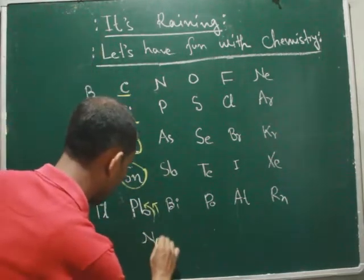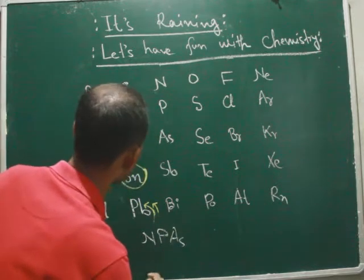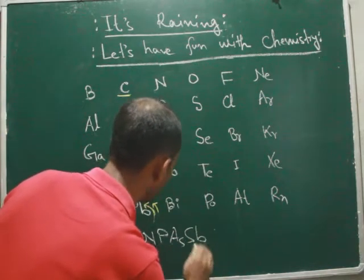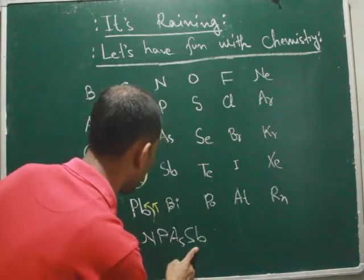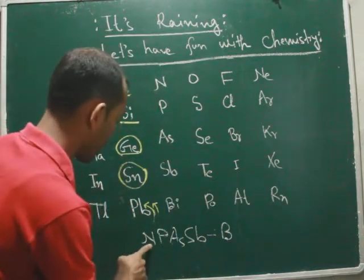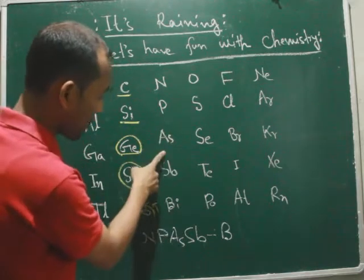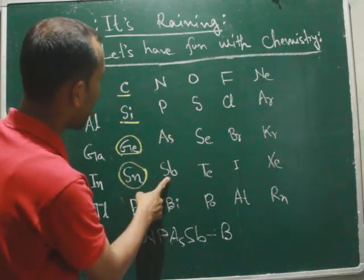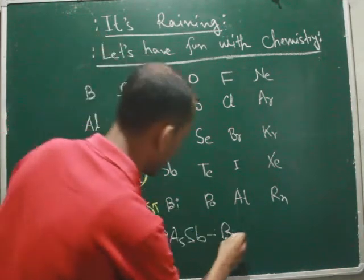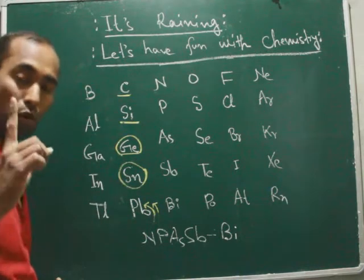So to confirm: Nitrogen — symbol N, Phosphorus — symbol P, Arsenic — symbol AS, Antimony — symbol SB. Nagan passed. Remember this mnemonic carefully.